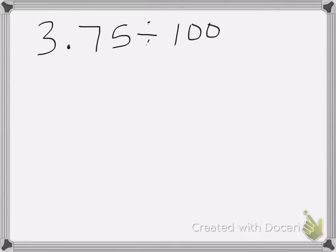In this example, we have 3.75, and we're dividing it by 100. So here I have two zeros, so that means I need to move my decimal place two places to the left.